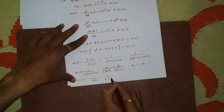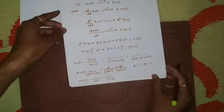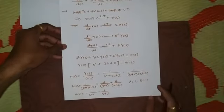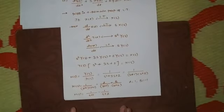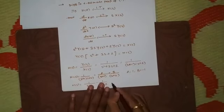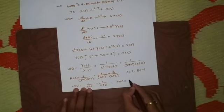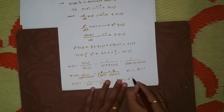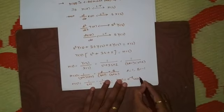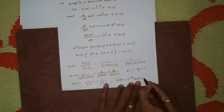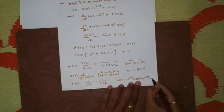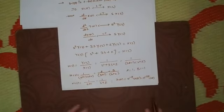In differential equations, no region of convergence is given, so by default we assume a right-sided signal. Hence the inverse Laplace gives the impulse response: h(t) = e^(−t)·u(t) − e^(−2t)·u(t). By this you can find the solution of differential equations.